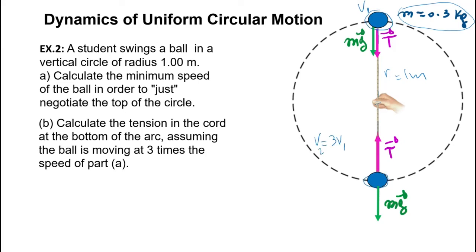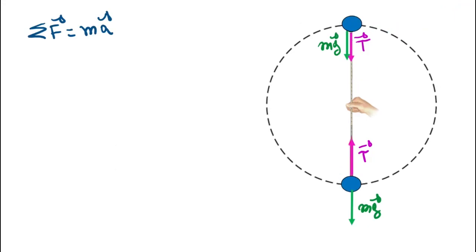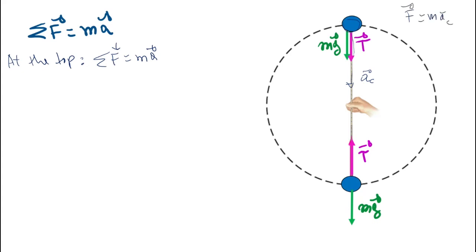Then we need to find the tension when the speed at the bottom V2 is 3 times V1. We are going to use Newton's law to solve this problem. At the top of the circle, sigma F equals mass times acceleration. In uniform circular motion, the acceleration is centripetal — it's toward the center. So the net force is also centripetal: F_c equals M times centripetal acceleration.